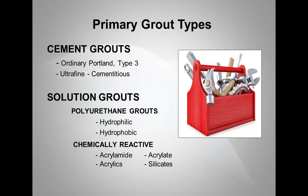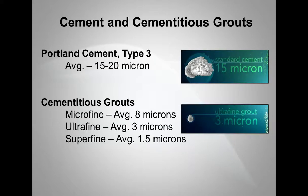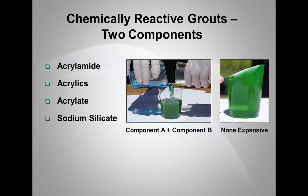The cement grouts and cementitious grouts comprise of the Portland cement type 3, with an average micron size of 15 to 20. Whereas the cementitious grouts consist of both the micro-fine, ultra-fine, and super-fine, averaging 8 microns for the micro-fine, 3 microns for the ultra-fine, and super-fine at 1.5 microns. The predominantly used grout here is the ultra-fines in the marketplace at 3 microns.